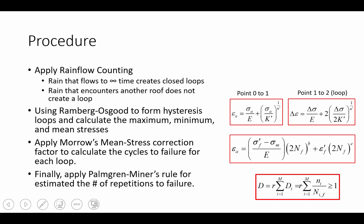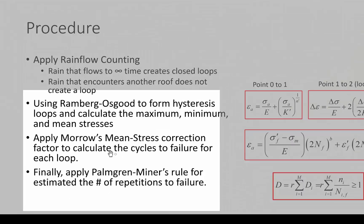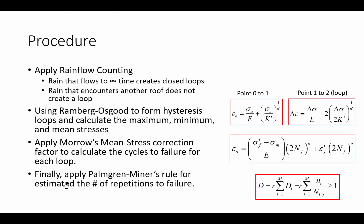To solve this problem, we have a procedure. And that procedure is as follows. First, we're going to apply the rain flow counting algorithm, where rain that flows to infinite time creates a closed hysteresis loop, and rain that encounters another roof does not create a loop.